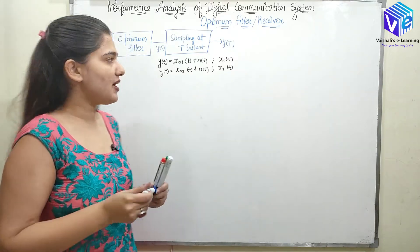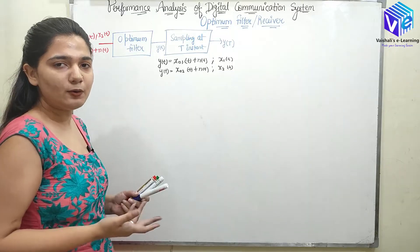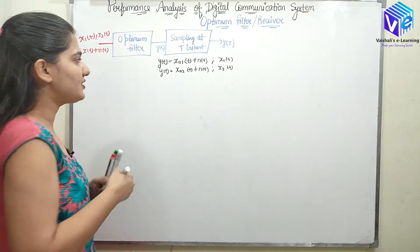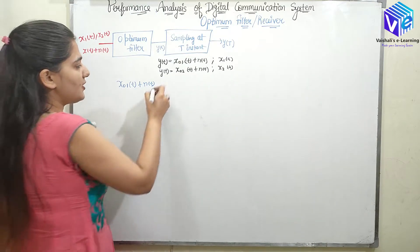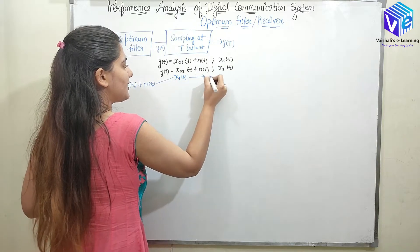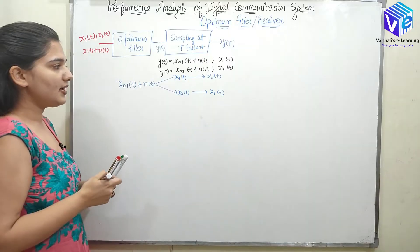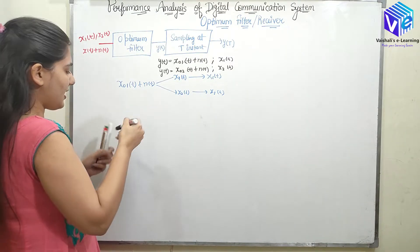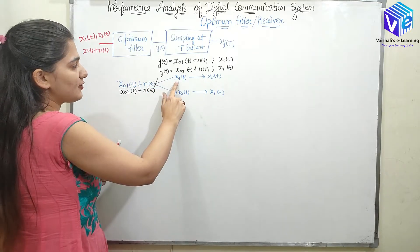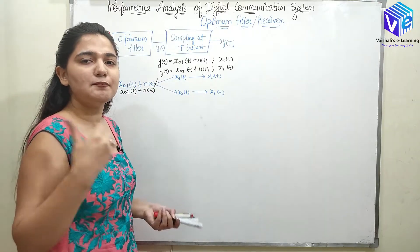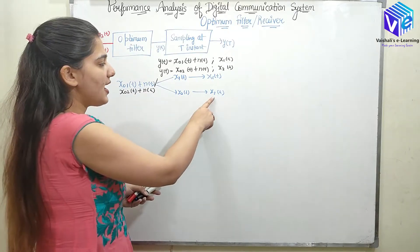Now, how does this optimum filter work? When there is no noise, it detects the correct output — obviously there would be no error. But when noise is present, it checks the output value X-naught-1(T). If X-naught-1(T) plus N(T) is close to X1(T), it will decide it is X1(T); if it is close to X2(T), it will decide it is X2(T). When the output value is closer to X1(T), the decision is X1; when closer to X2(T), the decision is X2.